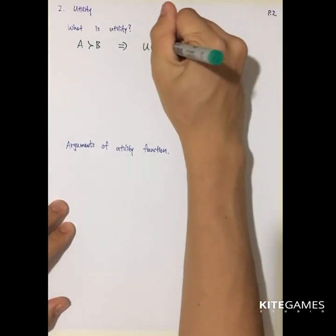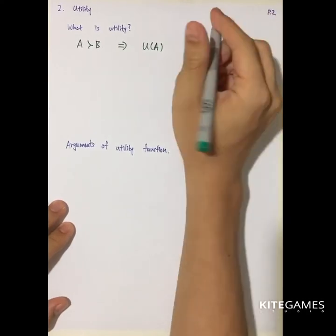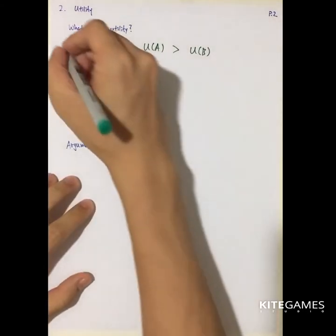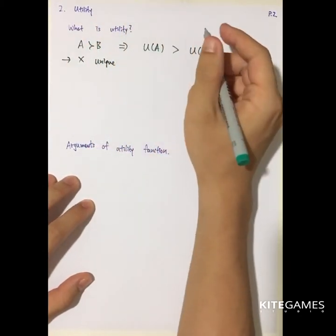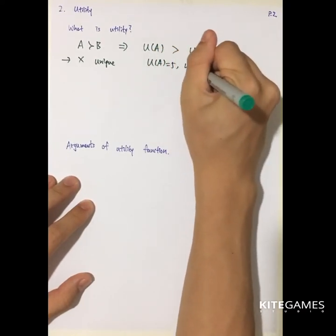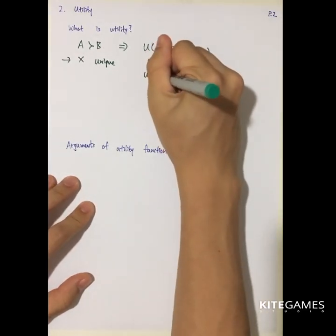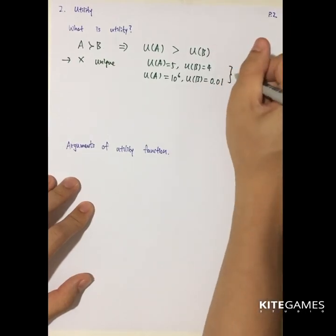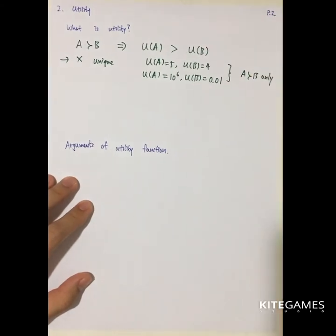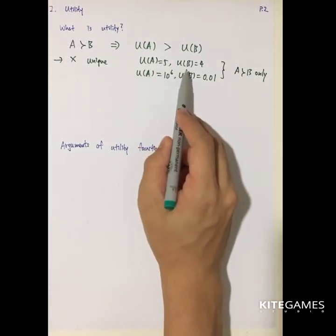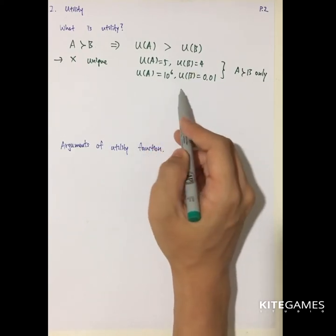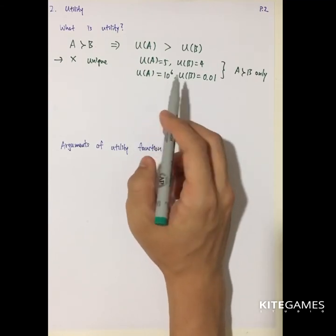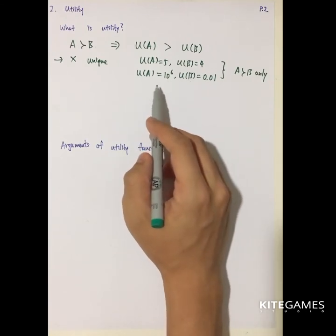Utility is a way to put bundle A into a function and bundle B into a function, then compare the numeric values. One important property of utility is that it is not unique. The utility of A may be 5 while B is 4, or the utility of A may be 1 million while B is 0.01 — both cases say only that A is preferred to B. Utility does not say A is 1.25 times better than B. So utility is just a ranking of bundles. We call this ordinal utility.